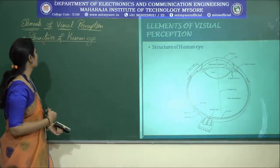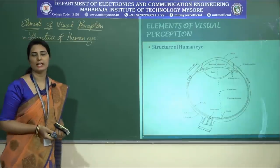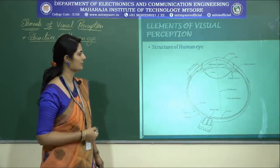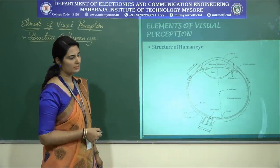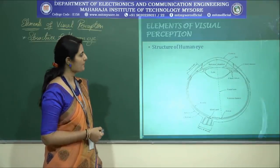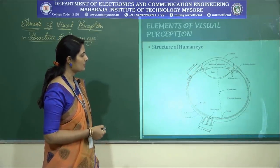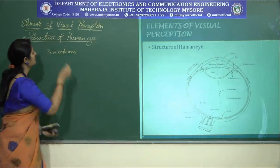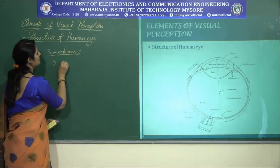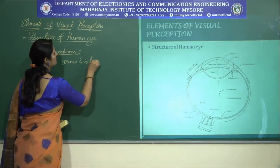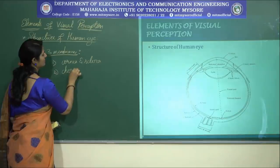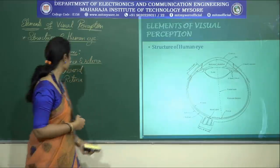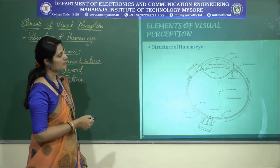This figure shows the horizontal cross-sectional image of the human eye. The eye is nearly a sphere with an average diameter of approximately 20 millimeters, and it is enclosed by three membranes. The first is the cornea and sclera. The cornea is the tough transparent tissue that encloses the outer portion of the eye.